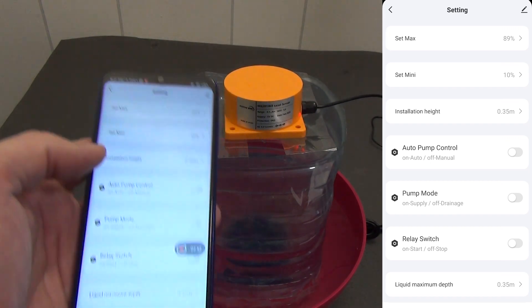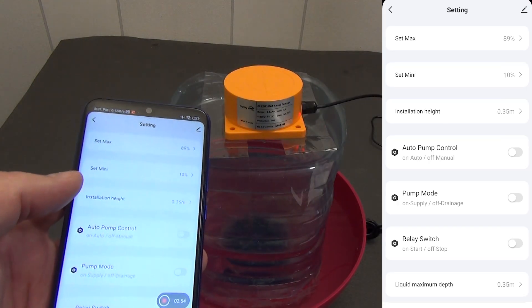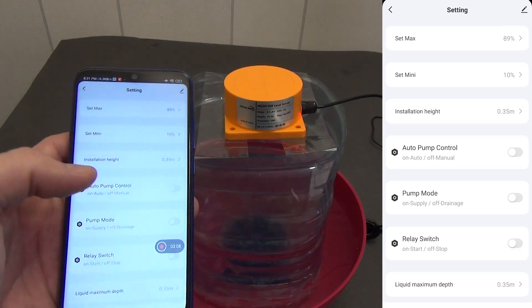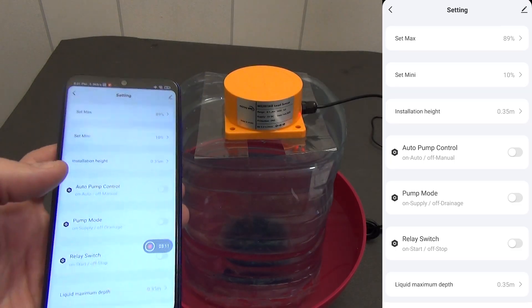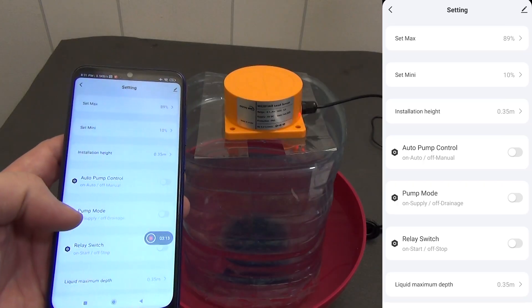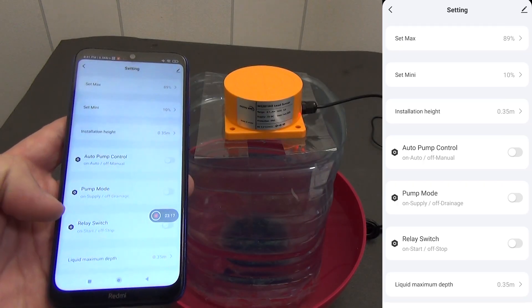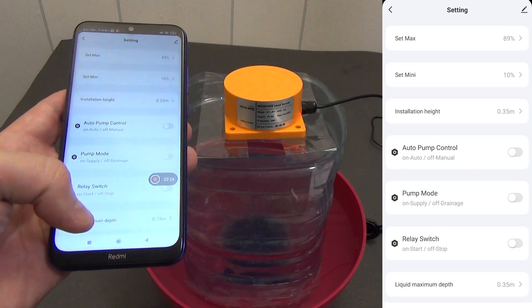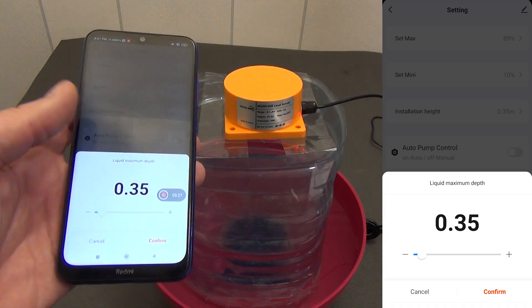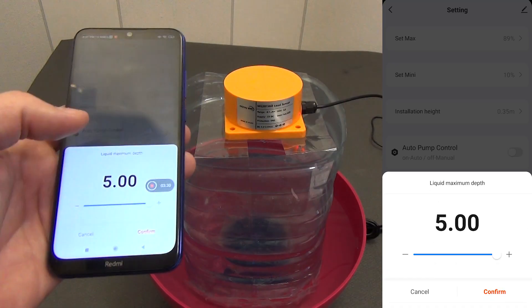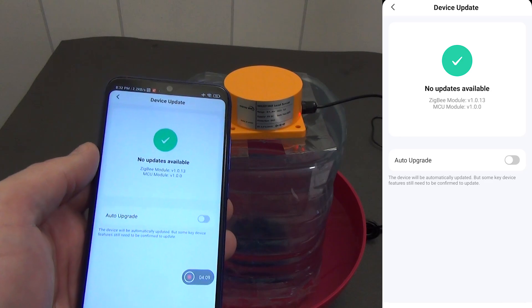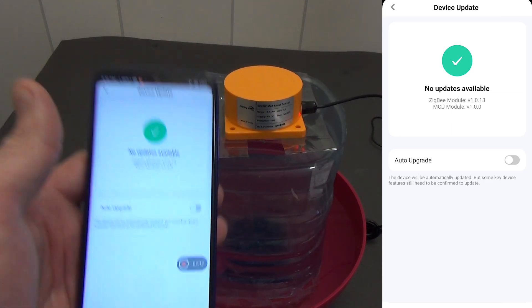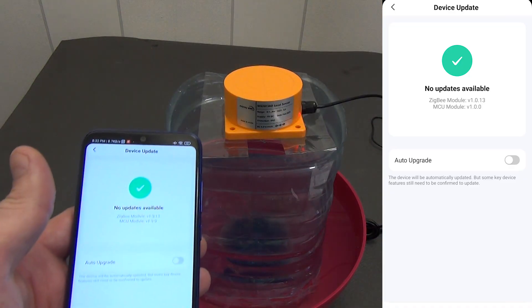The following parameters do not apply to this model, but I think that there are other models with a built-in relay models for connecting external devices. Here we see the following settings: Automatic pump control can be enabled so that the system itself turns on or off the pump. Pump mode, pump mode filling or draining. Relay switch, a relay that controls the pump, switching the operating mode. The maximum liquid depth is 0.35 meters. In fact, 5 meters is the maximum level that the sensor sees. All alarms, trigger limits and even pump automation are all configured directly in the application. That is, in the future you cannot approach the equipment at all, everything is already smart and autonomous.